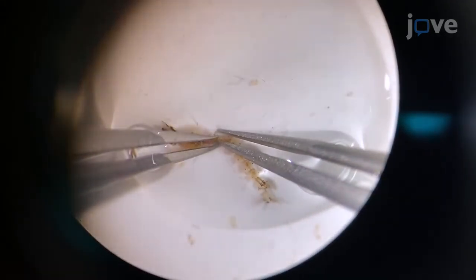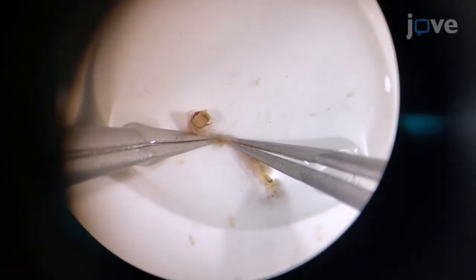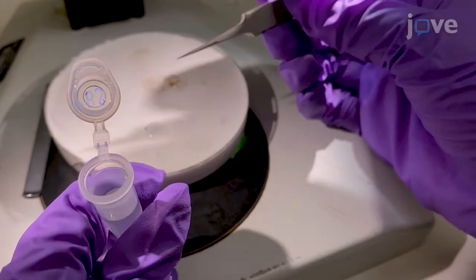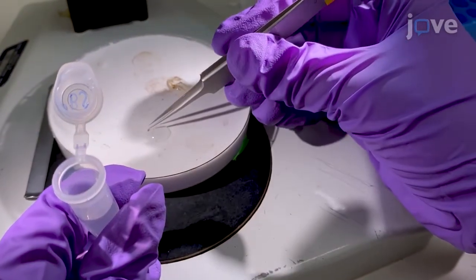Gently pull the head with minimal constant force to detach from the rest of the body, while the glands remain attached to the head. Discard the body portion of the larvae carcass.